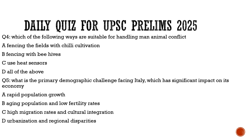Moving to question four: Which of the following ways are suitable for handling man-animal conflict in forest zone environments? Options are: fencing the fields with chili cultivation, fencing with beehives, use of heat sensors, or all of the above. The correct option is all of the above — this was brought up by the Kerala government.